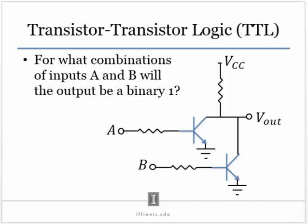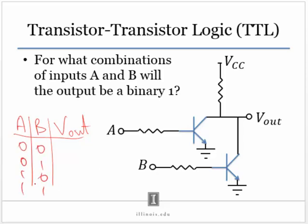So what happens here? A, B, V out. So 0, 0, 0, 1, 1, 0, 1, 1.